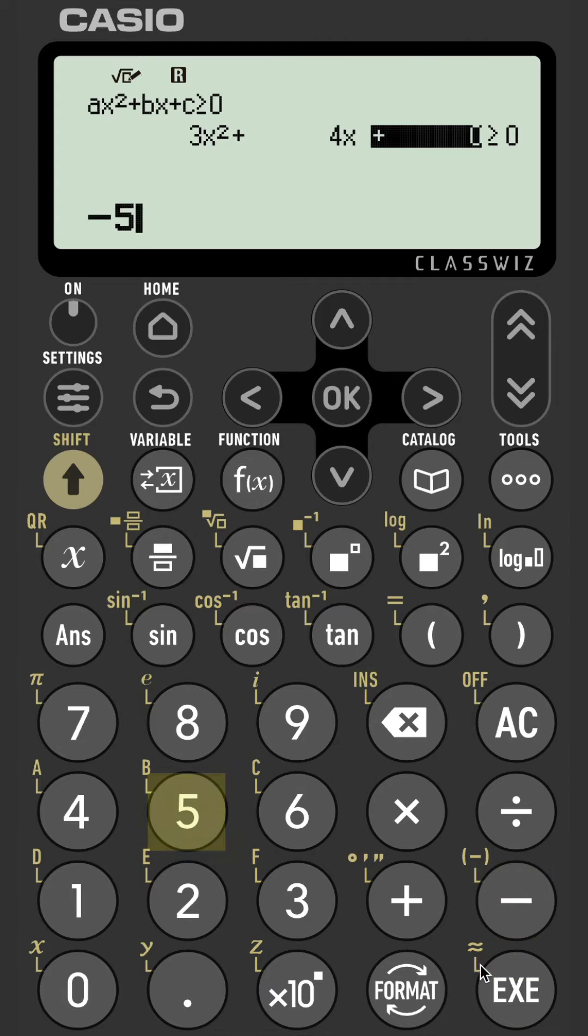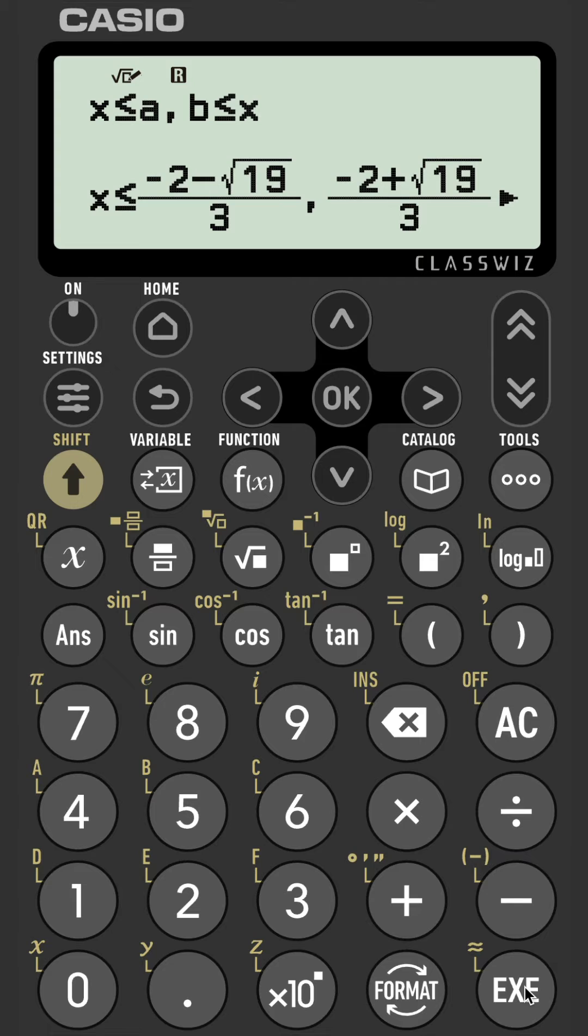And then press execute one more time. This may depend on your calculator setup, but in the first instance we have SURD or Radical Solutions.